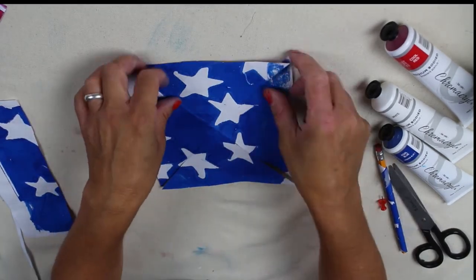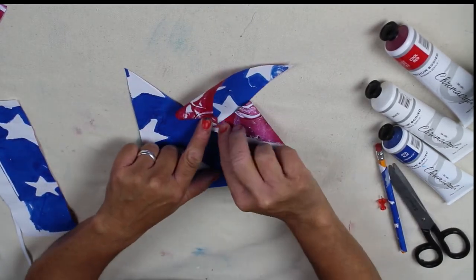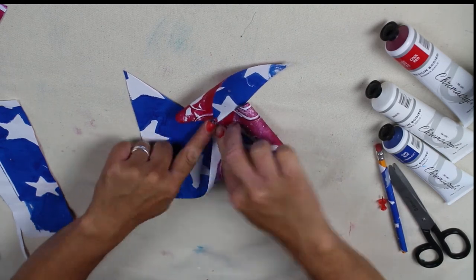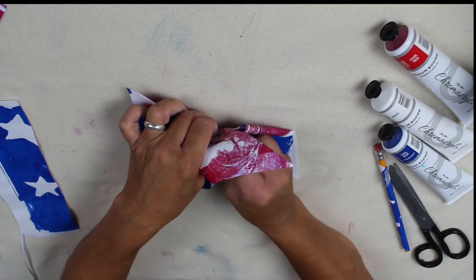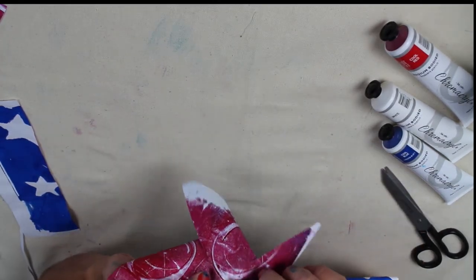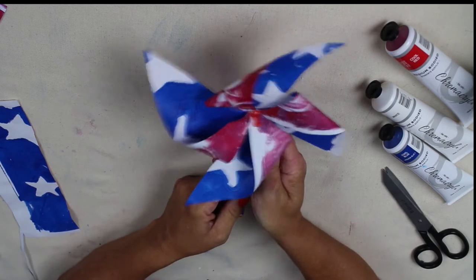Now, starting with the top left edge, fold to the center. And do that for every other corner. So you end up with a pinwheel shape and secure with a pin. And put that pin carefully into the eraser part of the pencil.